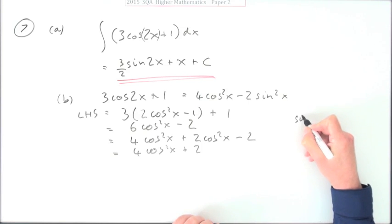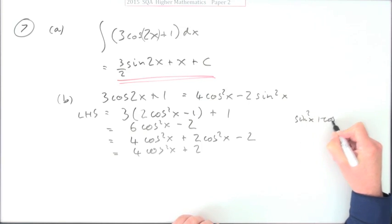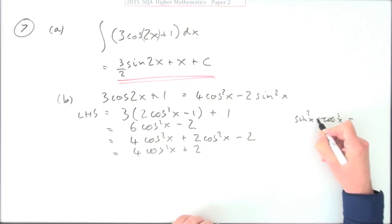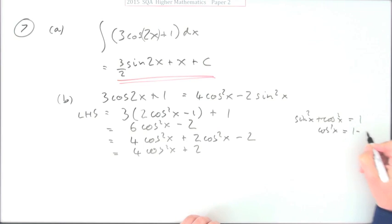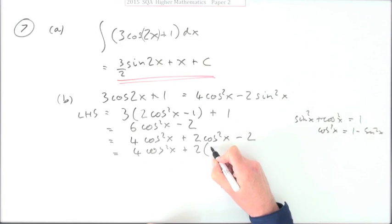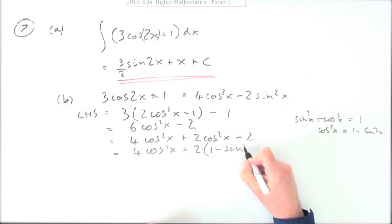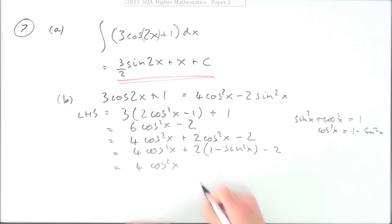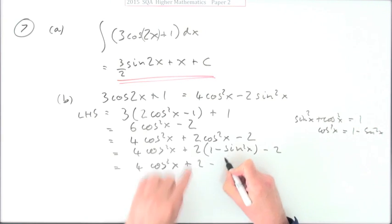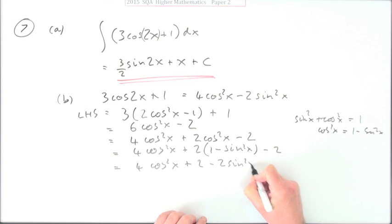Now I know another identity. I know that sine squared and cos squared, that was a plus there, comes to 1. So if I've got a cos squared I don't happen to want, I can always replace it with 1 minus sine squared. So that's what I'll do here. I don't want this cos squared, replace it with 1 minus sine squared.